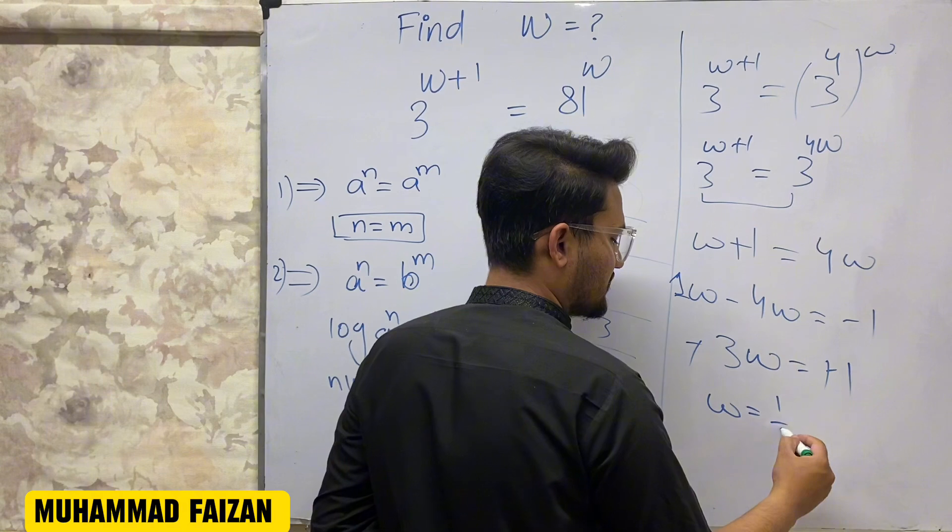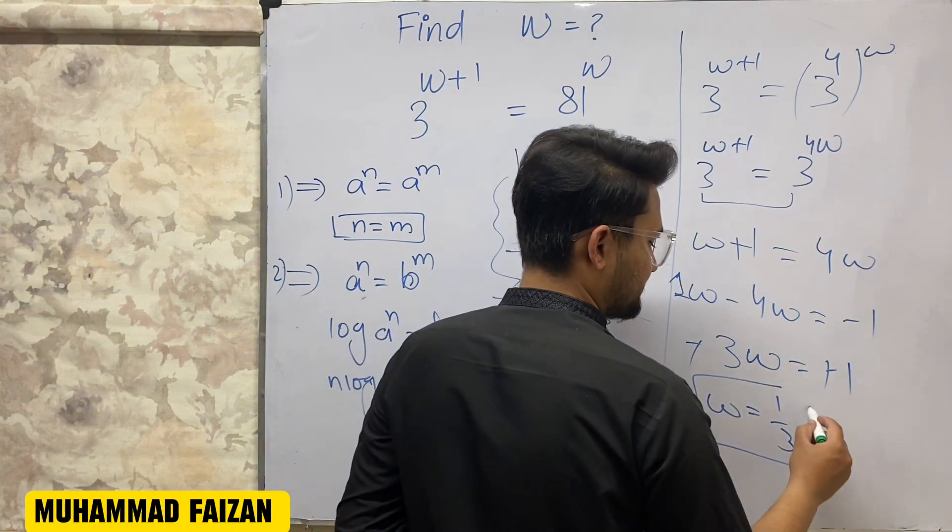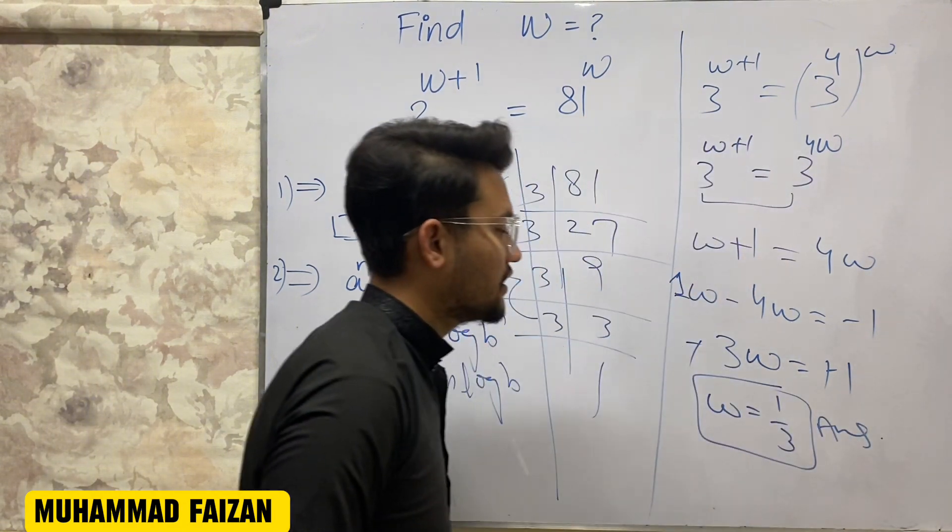So we can solve: W is equal to 1 by 3. W equals 1/3.